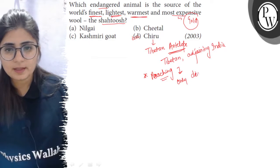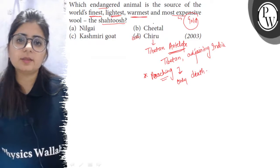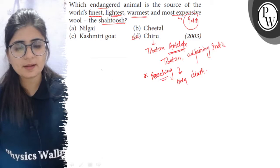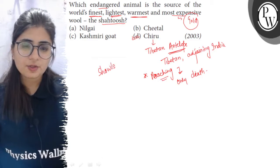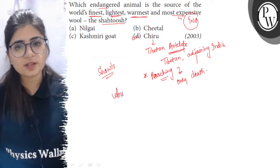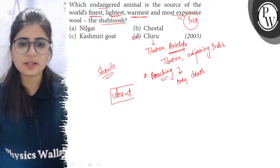It is over-exploited for its wool, which can be obtained only after its death. The animal is killed, and the wool is then used to make shawls. The right answer to this question is shiru, or the antelope.